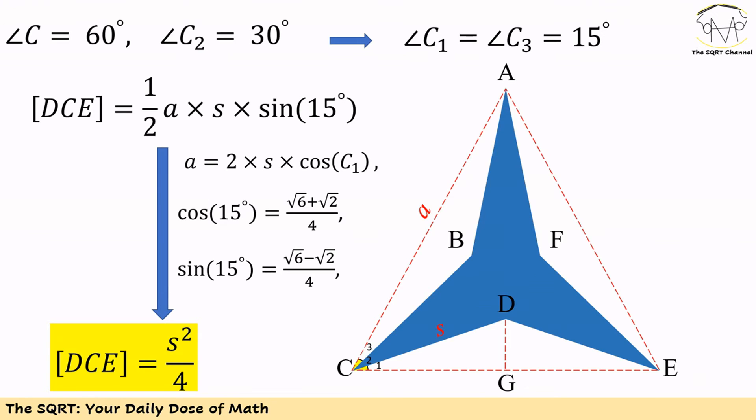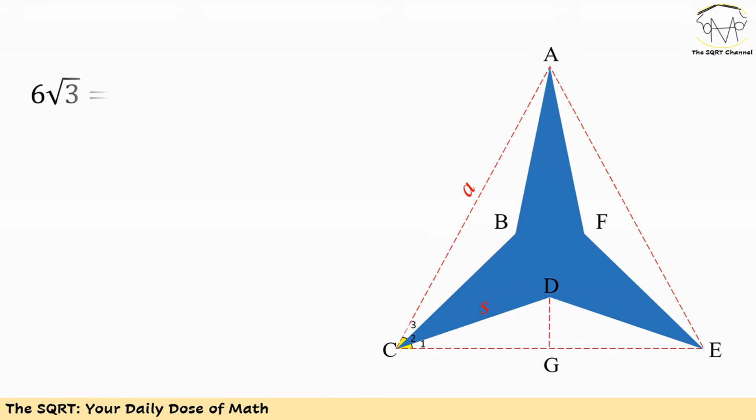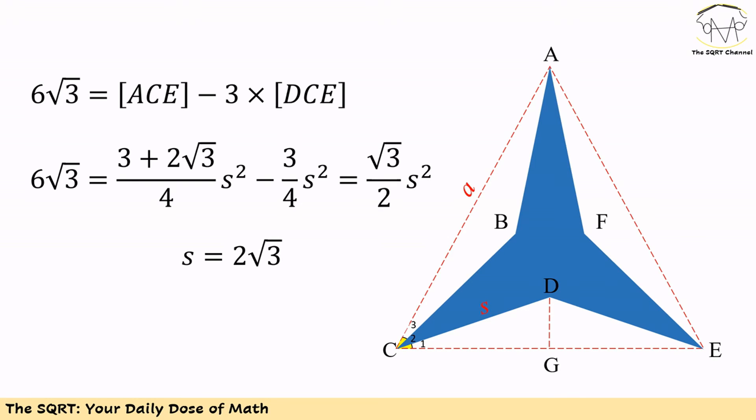So we know area of ACE minus 3 times area of DCE is equal to 6√3. For area of ACE we can use (3 + 2√3)/4 times s², and then for area of DCE we can use s²/4.